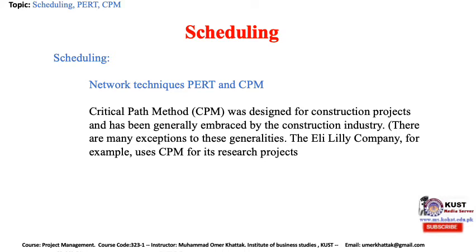For almost half a century, PERT and CPM networks have been used in project management. However, in 2005, the PMI — Project Management Institute — renamed PERT as ADM, Arrow Diagram Method, and CPM as PDM, Precedence Diagram Method. In general, we simply refer to either as a network. If we wish to refer specifically to a PERT or ADM network, where the activities are shown as arrows on the network, we will call it AOA — activity on arrow network. And if we refer to a CPM network, where the activities are shown as nodes, we will call it AON — activity on node network.